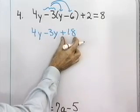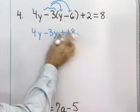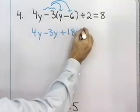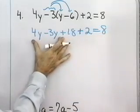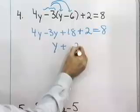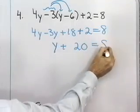So I get 4y minus 3y plus 18. A very common mistake for students to make at this point is to write down negative 18. Take the negative sign with the 3. When you multiply, you get positive 18. Plus 2 is equal to 8. Simplifying this side, I have 4y minus 3y is y, plus 20 is equal to 8.